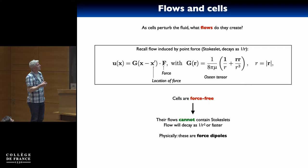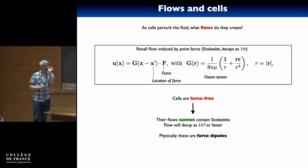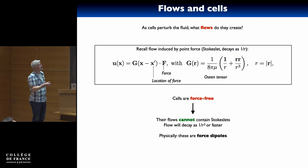I'll remind you that we talked, I think in the first lecture, about the fundamental flow in a viscous fluid due to a force. If I put a localized force at a particular point x-prime, then at length scales much further away from the scale that characterizes where I'm distributing this force, I get a flow that decays like 1/r. This is the famous Stokeslet — the flow due to a point force. It has this famous isotropic response, and importantly it decays like 1/r.